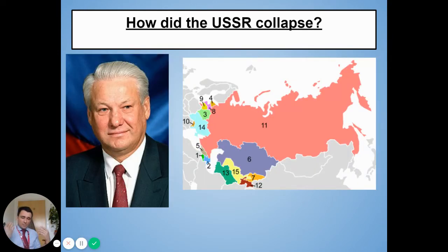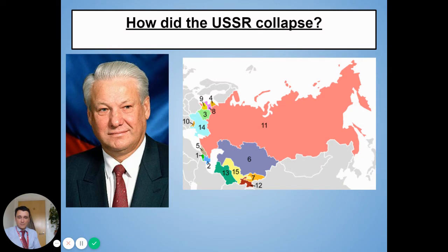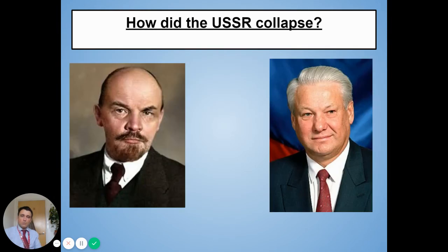Yeltsin basically the next day asked all the different independent states whether they wanted to remain communist and remain part of the USSR. They said no — they didn't want to remain part of the USSR and they didn't want to remain communist. And so we see Russia become capitalist, the USSR no longer exist — it's dissolved completely. These states became independent and Russia went through a huge change very quickly. All of the communism that we'd looked at since 1917 with Lenin was gone in 1991 with Boris Yeltsin.